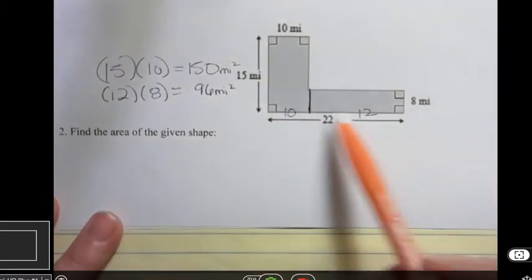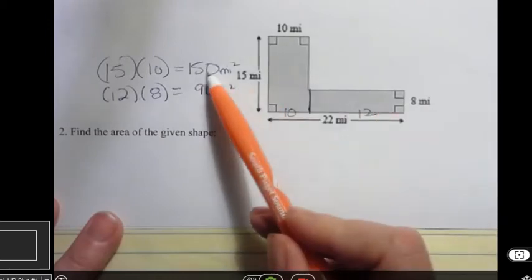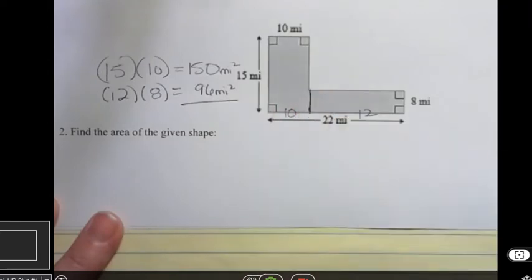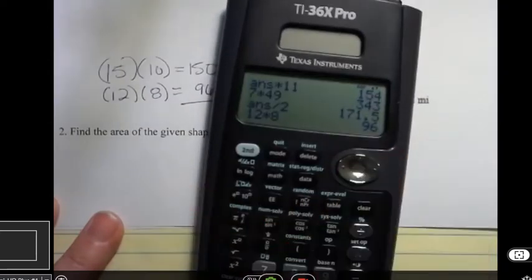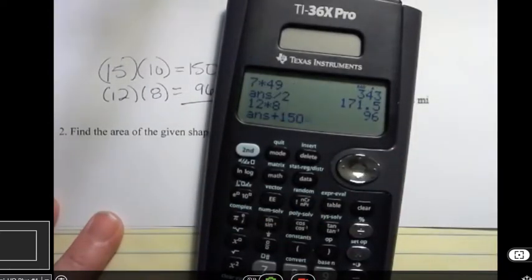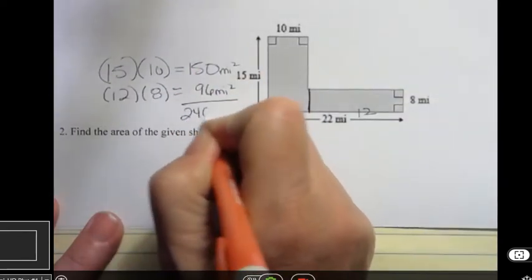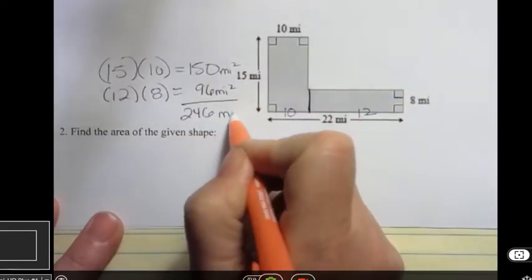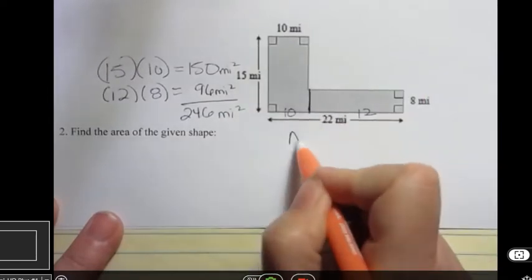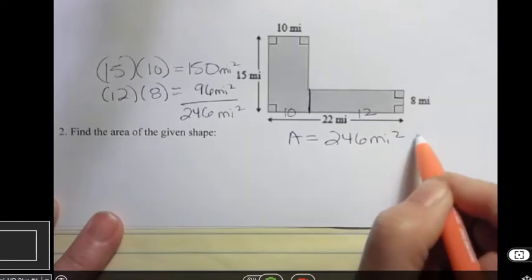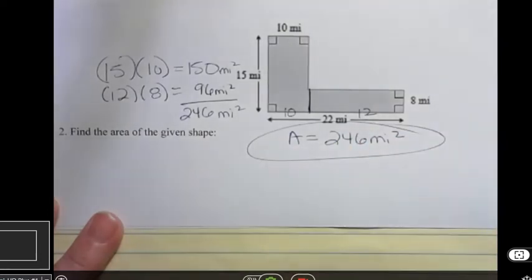So now I want to find the area of the entire shape, and I found the first one and the second one. So now I want to add those two together. And so I had 96, and I'm going to add 150, and that's going to give me 246. And that is the area of the entire shape, 246 miles square, or square miles.